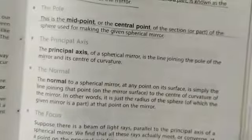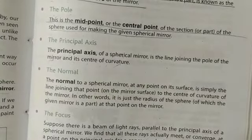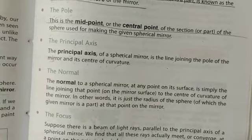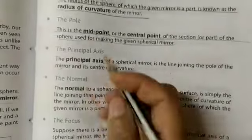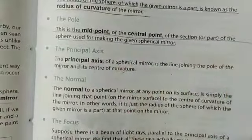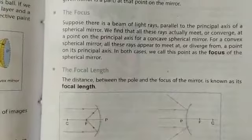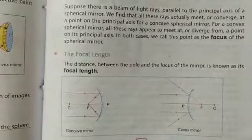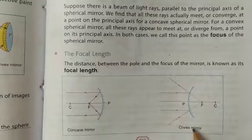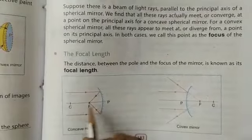You have to understand: center of curvature, which is the center of the sphere of which the given mirror is a part; radius of curvature; pole; principal axis; normal; and focus. You can see these images. These terms are going to be asked in your examination for concave mirror or convex mirror.